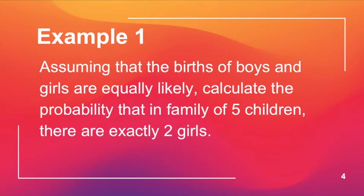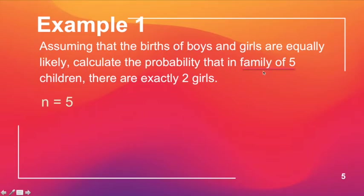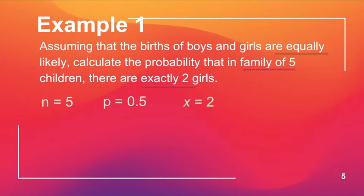Assuming that the births of boys and girls are equally likely, calculate the probability that in a family of five children there are exactly two girls. From this problem we identify: n = 5 (the number of trials — family of five children), the probability of success p = 0.5, and since the question asks for exactly two girls, the value of the random variable x = 2.